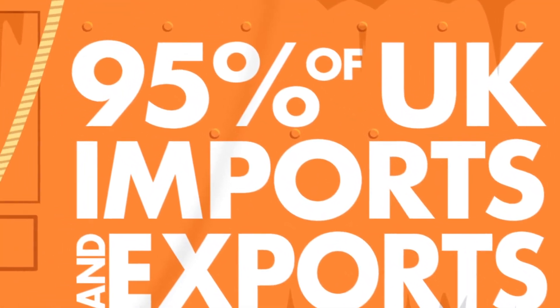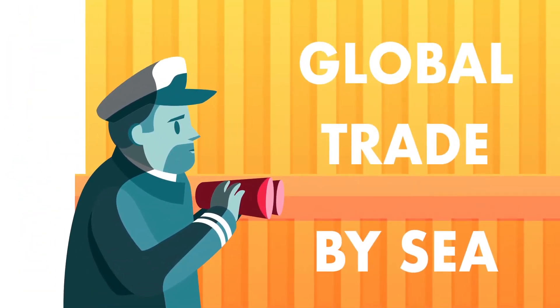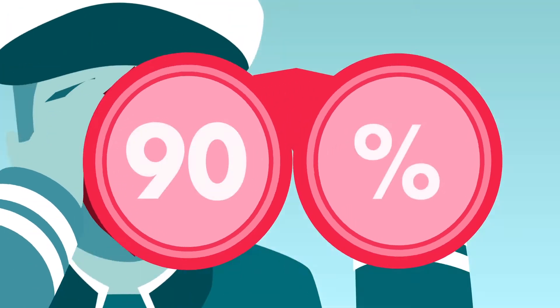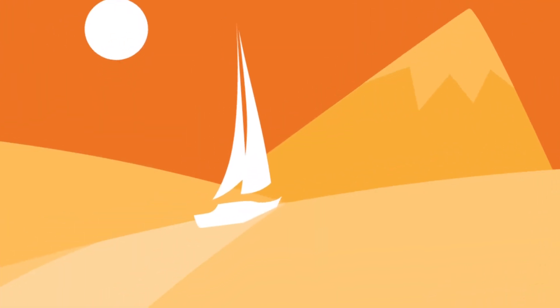95% of the UK's imports and exports are transported by ship. That's no surprise for an island nation. But with 90% of all global trade travelling by sea, every country is a maritime state, whether it has a coastline or not.